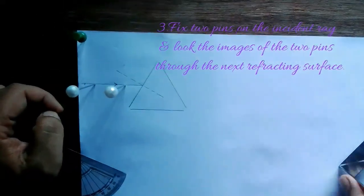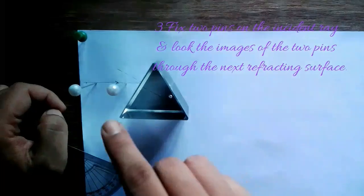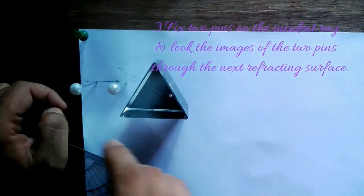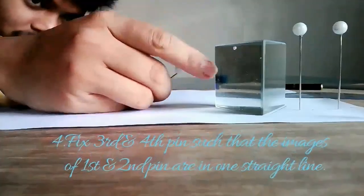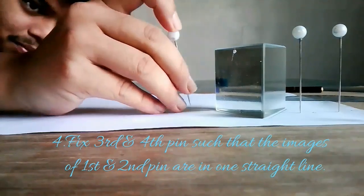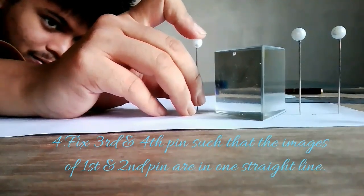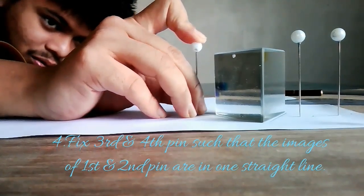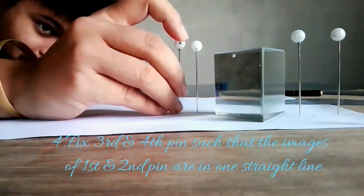Fix the pin on the side to follow the first and second pin through the prism. When you see the image through the prism, fix the third pin so that the first, second, and third pins coincide.